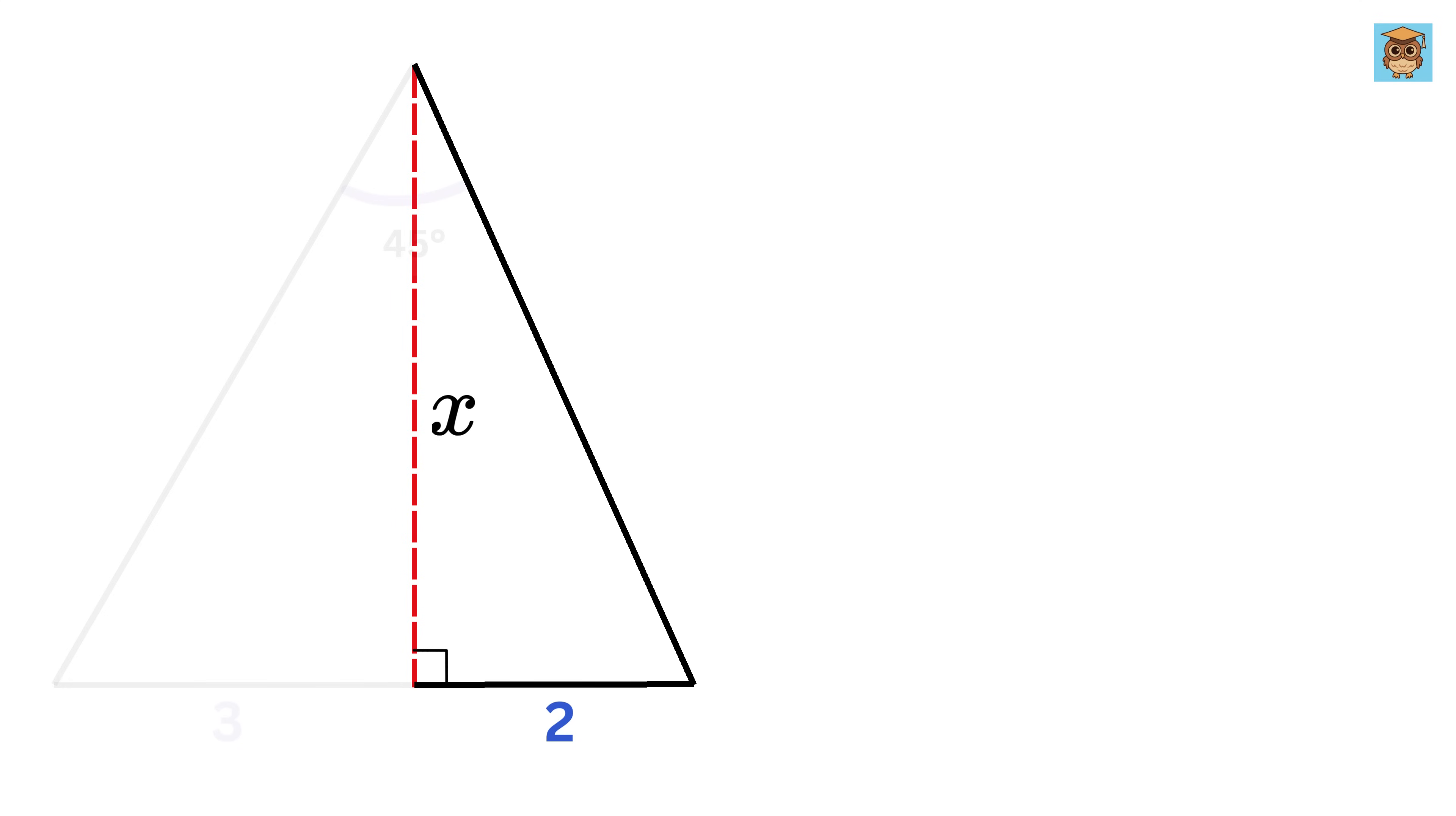Ok first, consider this right triangle. Let this hypotenuse be of length a. So we get a squared equals x squared plus 2 squared or 4. So a equals square root of this.